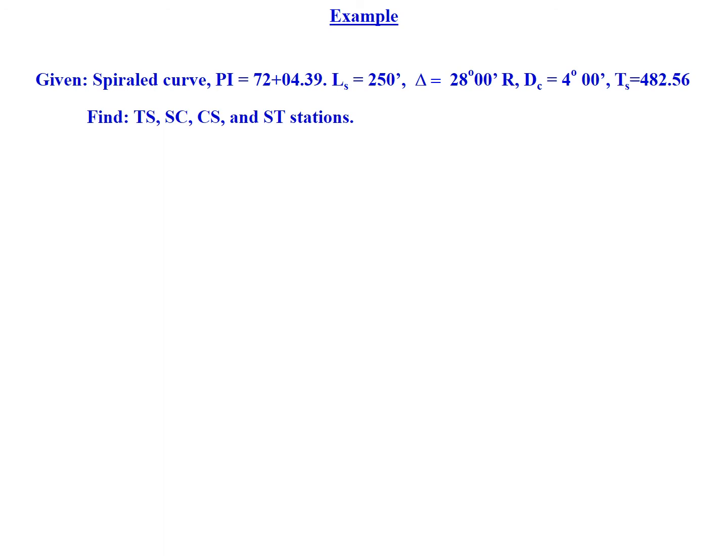A deflection angle of 28 degrees to the right, a degree of curve of 4 degrees, and a tangent length for this spiral curve of 482.56 feet. We're asked to find the key stationing for this curve.